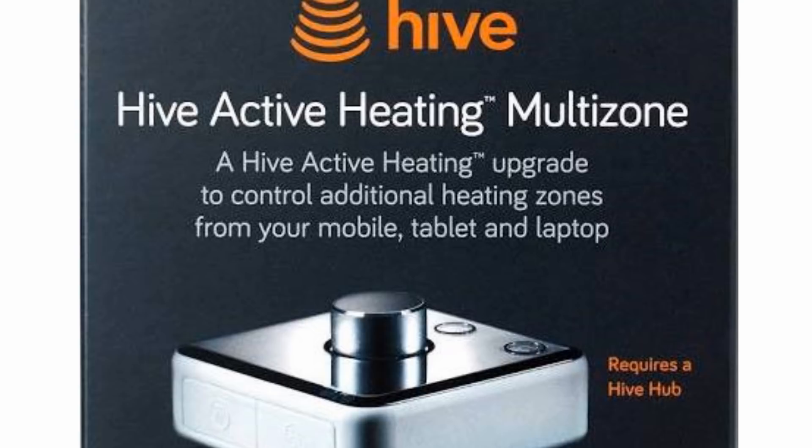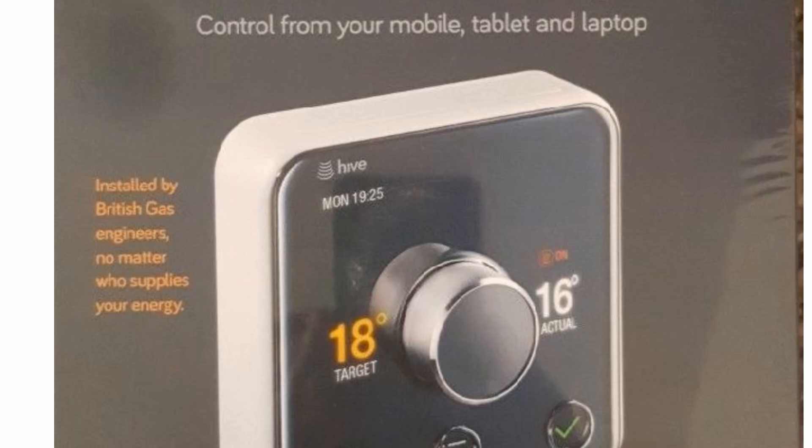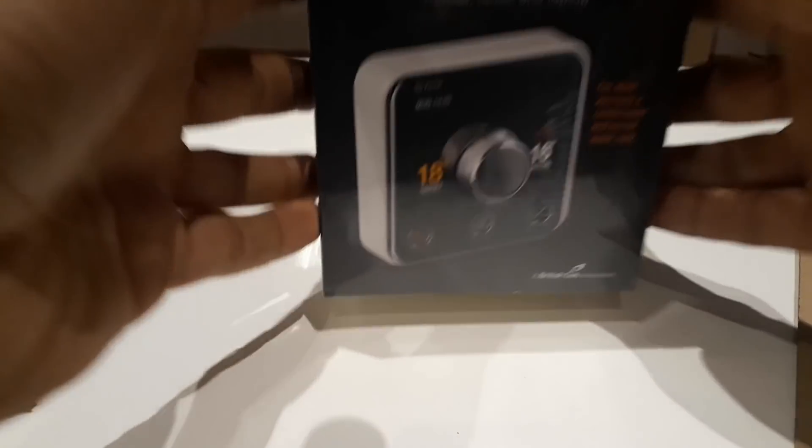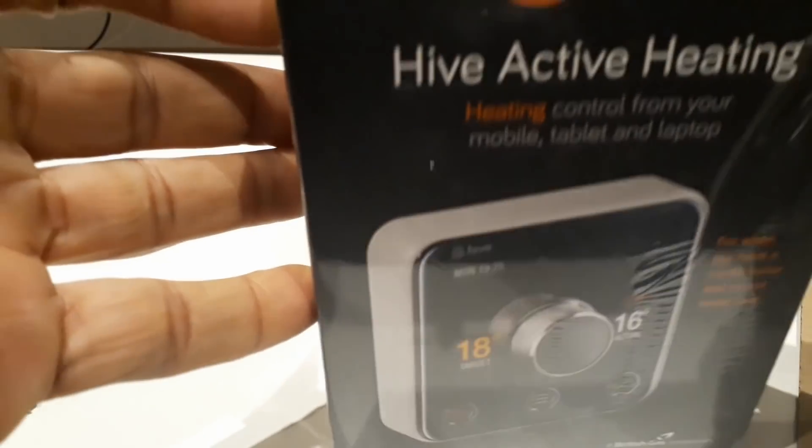The multi-zone one will be cheaper, but you don't get the hub and you probably don't get the receiver with it either because it's just an add-on. And there's the one that comes with installation. So when you buy it that's the most expensive one, and a gas engineer will come and install it for you. Make sure you've got the correct one for you.